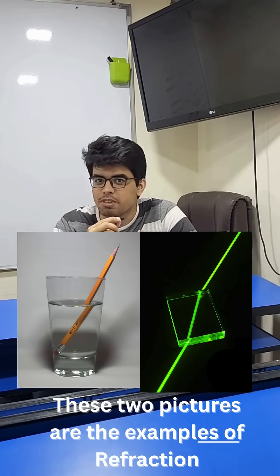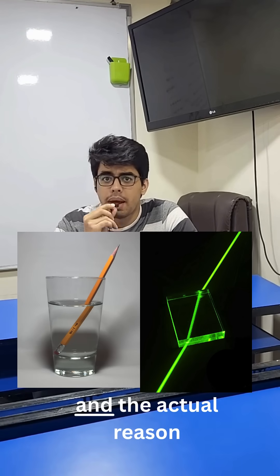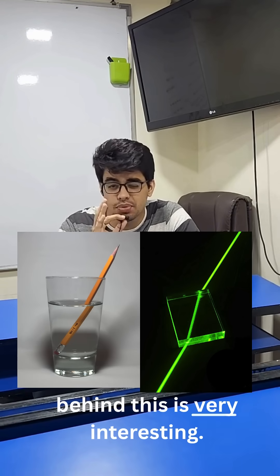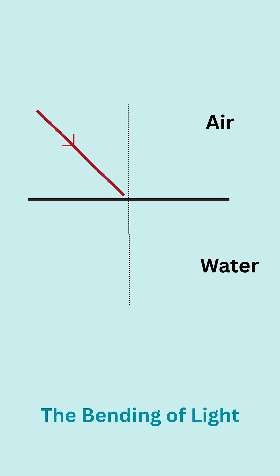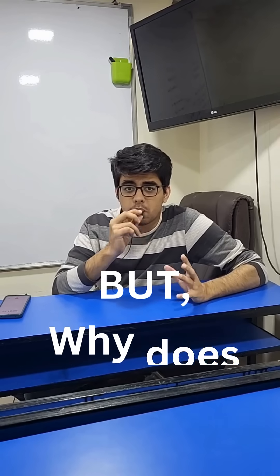These two pictures are examples of refraction, and the actual reason behind this is very interesting. The bending of light when it travels from one medium to another is called refraction. But why does light bend? The answer is change in speed of light.